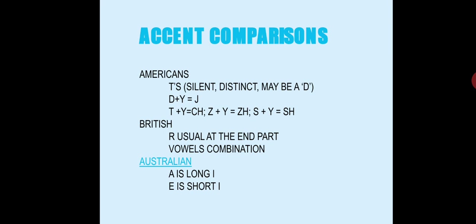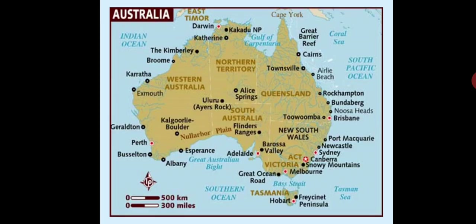The problem is that both American and British accent features can be found distinctly in the Australian accent, which makes it really difficult for people who don't know how Australians speak. Their A sounds like a long I — a very Texas-like sound — and the E becomes a short I. We will be comparing them using practice exercises later, so hold on tight.